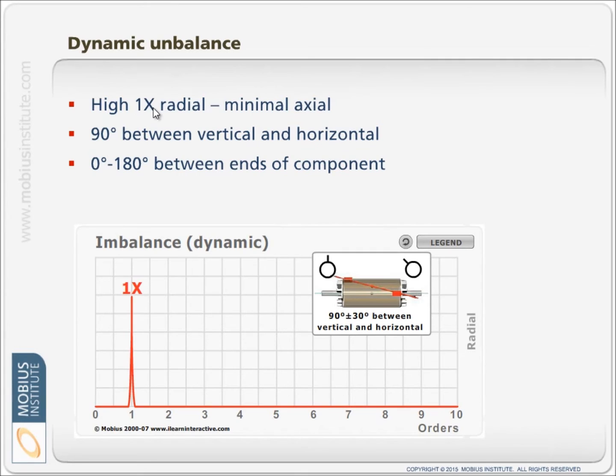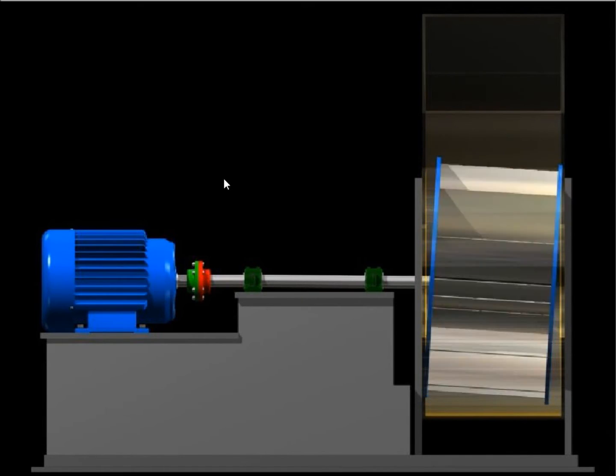In the case of axial vibration, we still get the radial motion, we still get that circular motion, which I'm not really highlighting in this animation. What I'm highlighting here is that we also get a rocking motion, and that causes axial vibration.